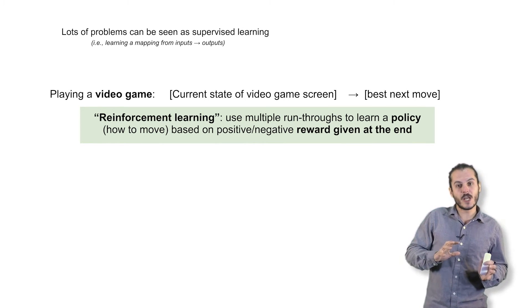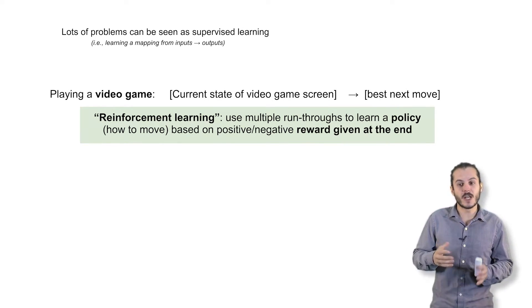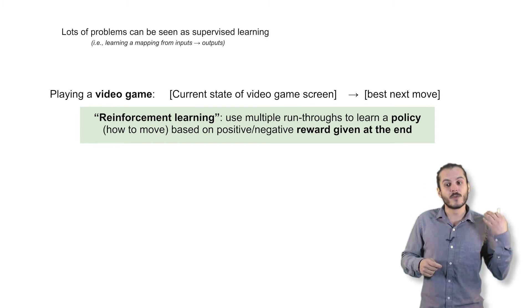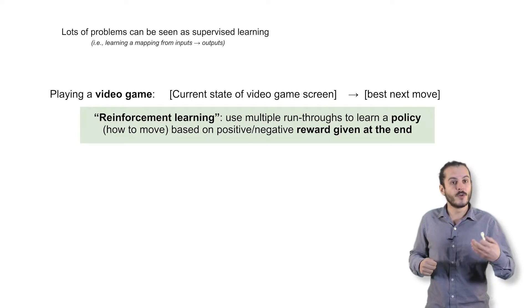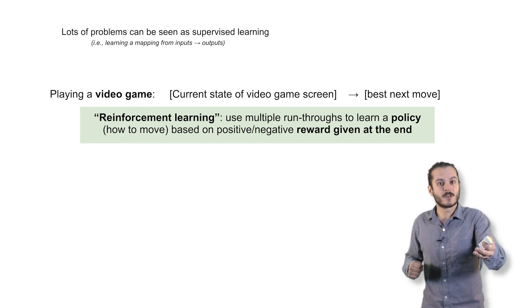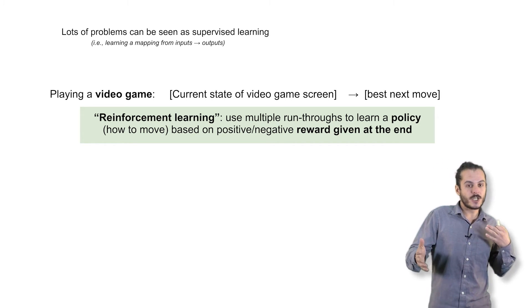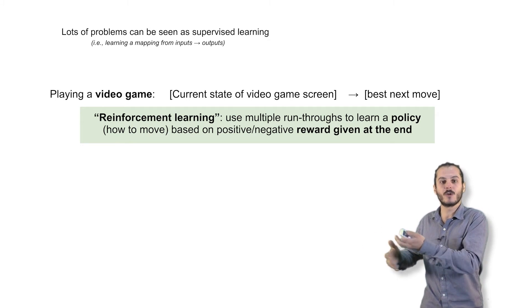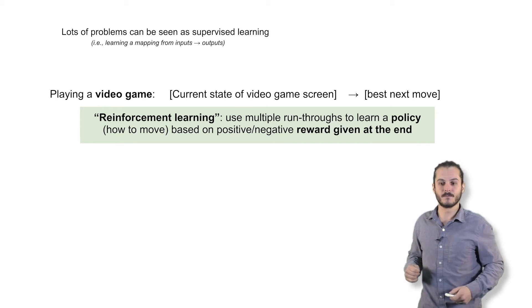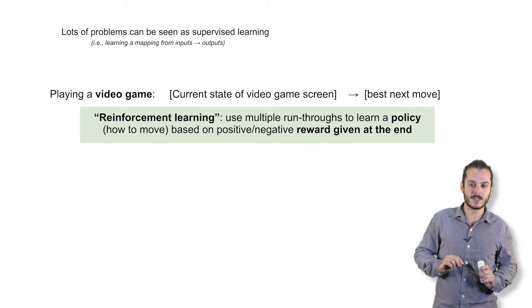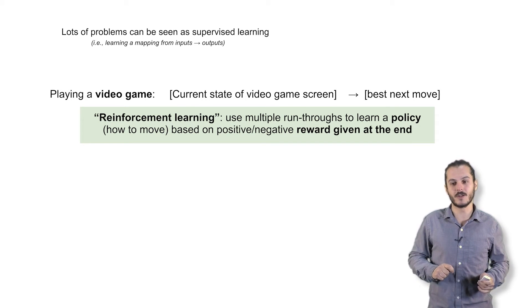One way such models are trained is through reinforcement learning, a type of supervised learning in which the algorithm performs many run-throughs of some sequence of events, and at the end receives a positive or negative reward. It then changes how it runs through the sequence to maximize that reward. This will come up later in the context of Go, which we'll discuss in a later tutorial.